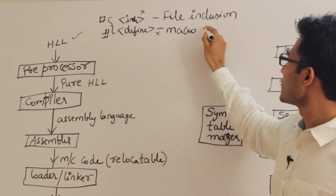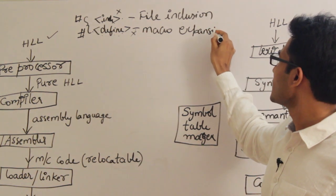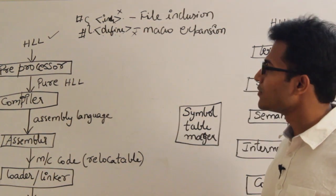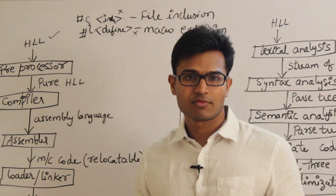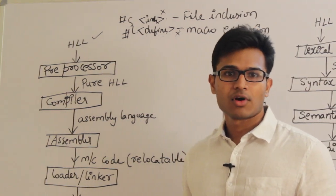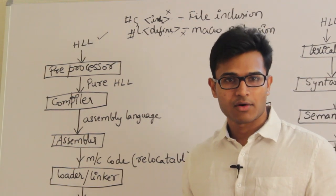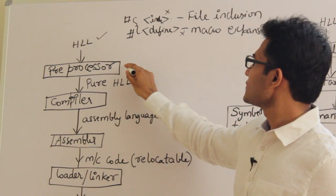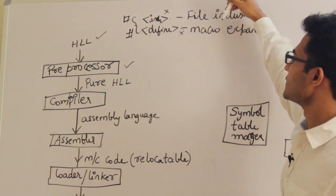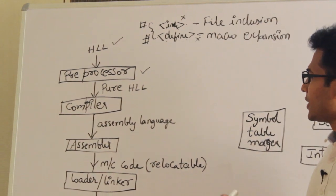Sometimes we are going to write macros also. Macros are nothing but small functions for which we don't want to really call a function. Function calling is an overhead. Macro calling is simple, that is why we go for macro expansion. So the pre-processor is generally going to do these things: file inclusion and macro expansion.